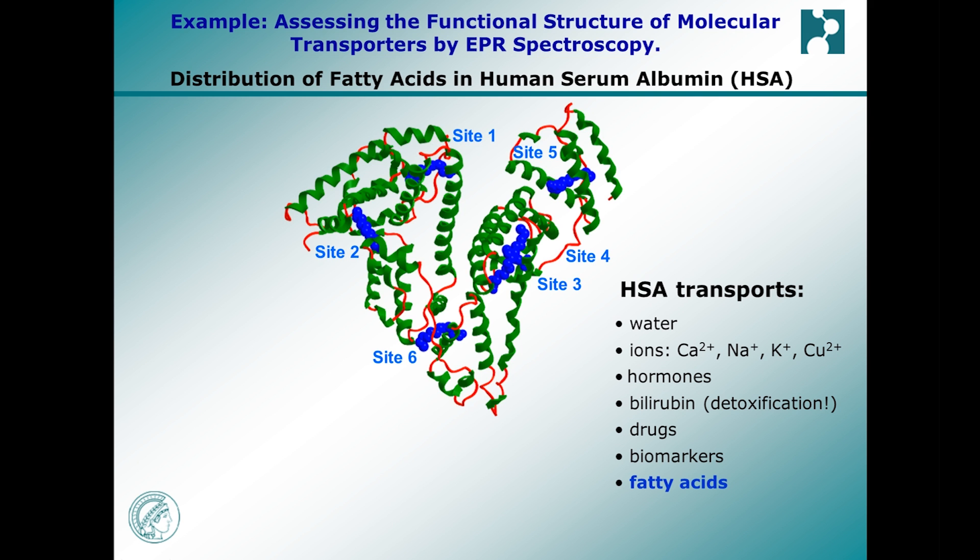Human serum albumin, or HSA, is a versatile transport protein for various endogenous compounds and drugs in human blood. It is the major transport protein for fatty acids in the circulatory system.